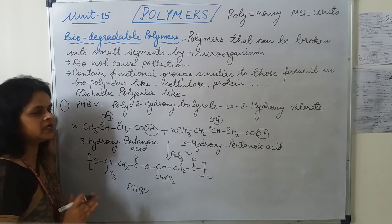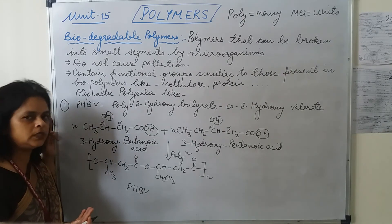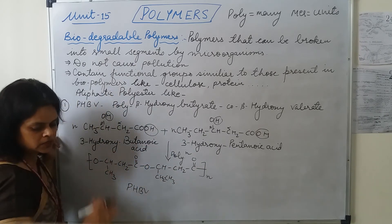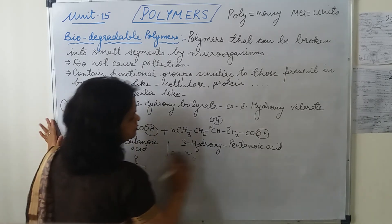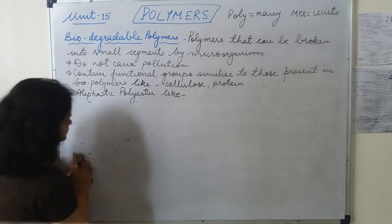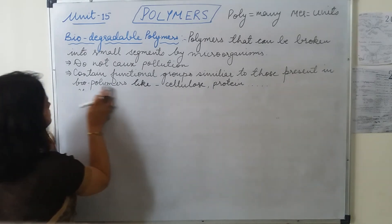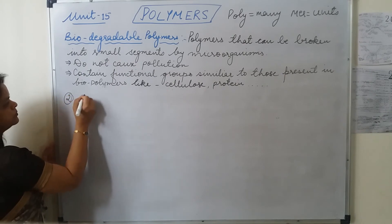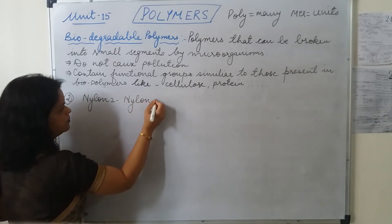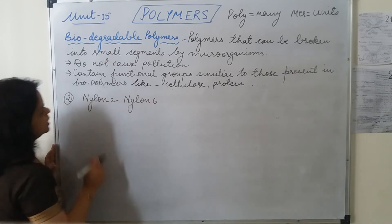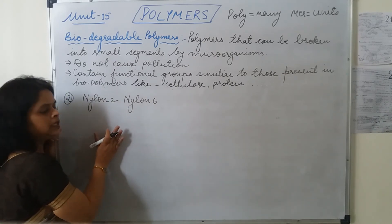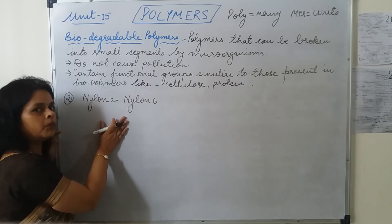This has been asked many times in board exams — the example of a biodegradable polymer, its meaning, the monomers, and the structure of PHBV. So students, just practice writing the structure. The second biodegradable polymer we are going to discuss is Nylon 2, Nylon 6. It is a copolymer of two monomers — glycine and aminocaproic acid — and it is a polyamide.